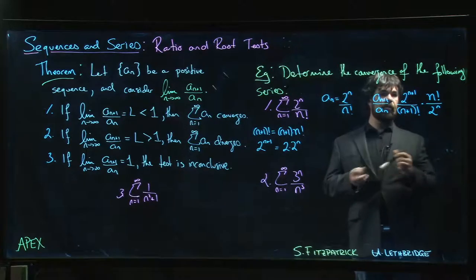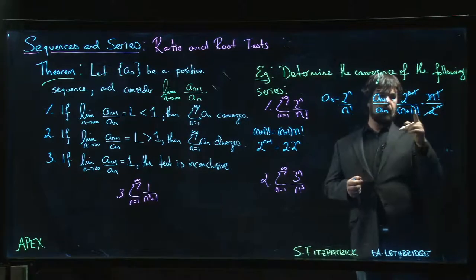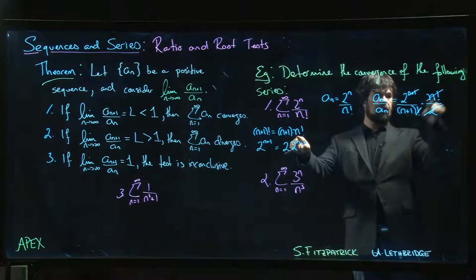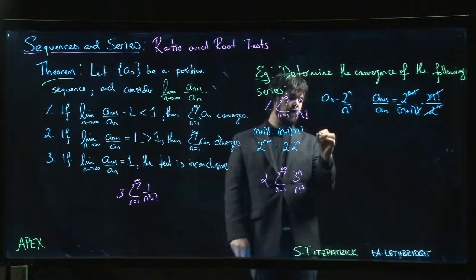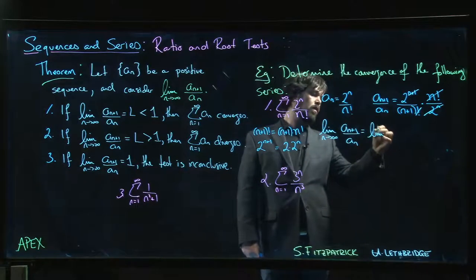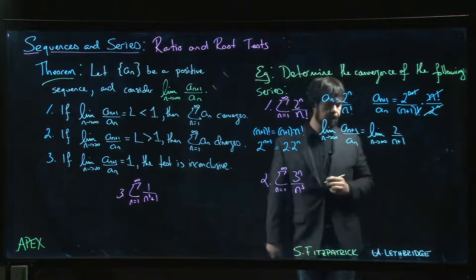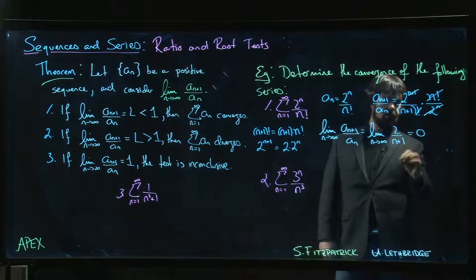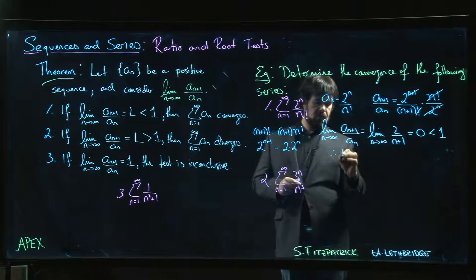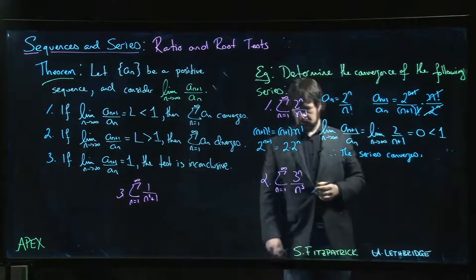And so we see that actually quite a bit cancels here. Two to the n is going to cancel with all but one of those twos. The n factorial cancels with the factorial. This n plus one factorial is n plus one times n factorial. Cancel the factorials. And we see that the limit as n goes to infinity of a_(n+1) over a_n, well, it turns out once you simplify, that's just the limit of two over n plus one. And that limit is zero. Zero is definitely less than one. And so our conclusion here is that the series converges.